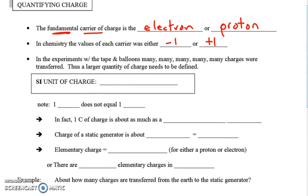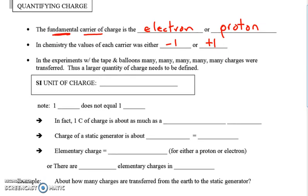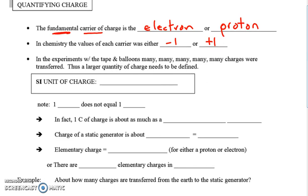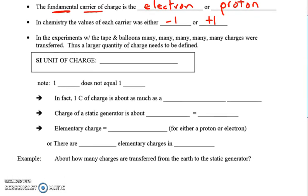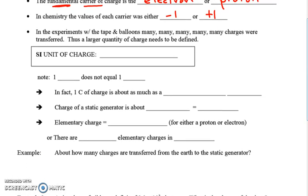For example, when we did the tape demonstrations, or if I rub a balloon against my hair, it will take on charge. Or when I charge up the static generator, a lot of electrons were building up. So we need something more than just saying an extra 5,600,000 electrons was transferred.